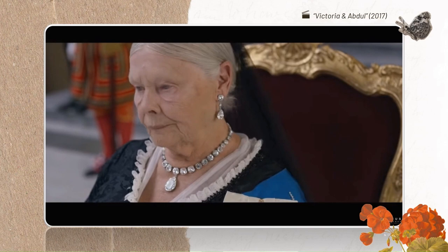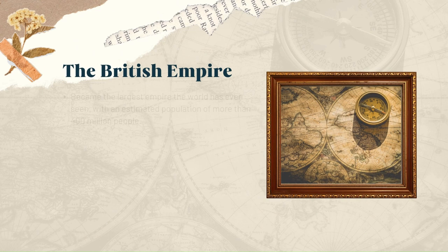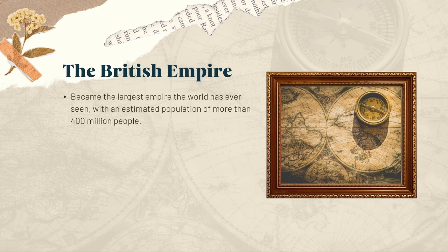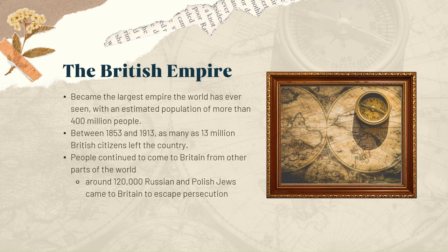The British Empire. During the Victorian period, the British Empire grew to cover all of India, Australia, and large parts of Africa. It became the largest empire the world has ever seen, with an estimated population of more than 400 million people. Many people were encouraged to leave the UK to settle overseas — between 1853 and 1913, as many as 13 million British citizens left the country. People continued to come to Britain from other parts of the world: between 1870 and 1914, around 120,000 Russian and Polish Jews came to Britain to escape persecution, many settling in London's East End and in Manchester and Leeds. People from the Empire, including India and Africa, also came to Britain to live, work, and study.